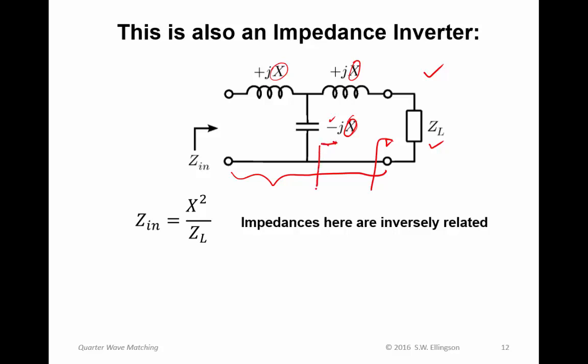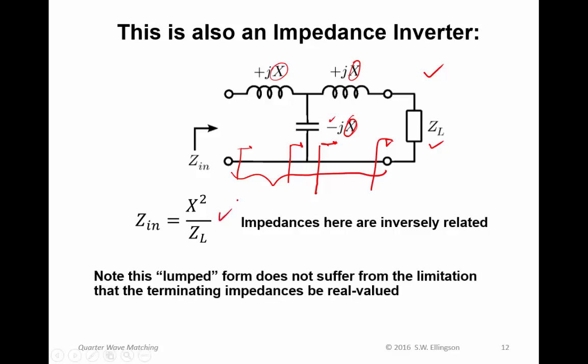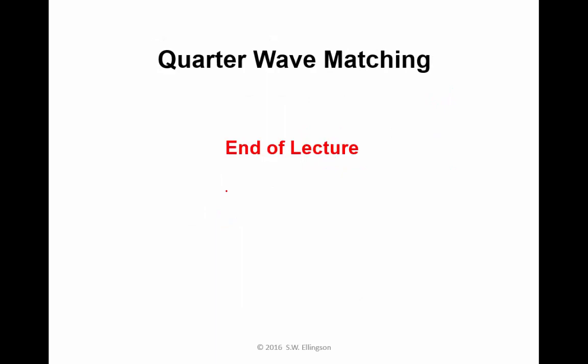One reason I mention this is because this lumped form of an impedance inverter does not suffer from the limitation that the terminating impedances have to be real valued. So here you could have a complex value. And here you'll have the reciprocal of the complex value times X squared. This concludes this lecture on quarter wave matching.